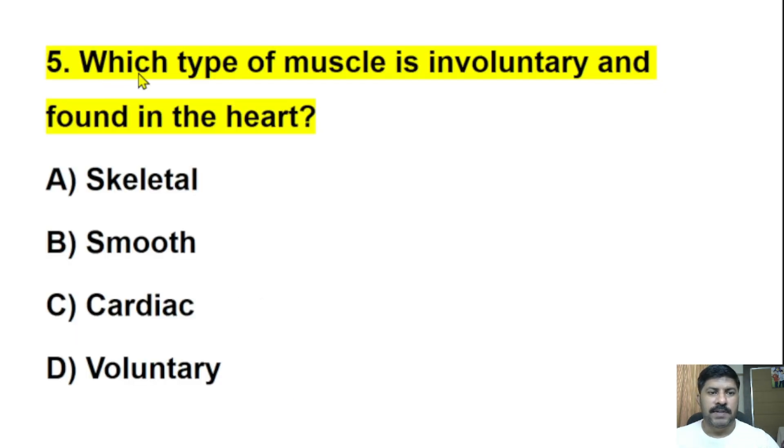Fifth question: Which type of muscle is involuntary and found in the heart? Skeletal, smooth, cardiac, or voluntary? The correct answer is cardiac muscle. Cardiac muscle is a specialized muscle that is only seen in the heart. Involuntary means we cannot control it. It works by its own signals. That is why it is known as involuntary muscle. Cardiac muscles are only seen in the heart.